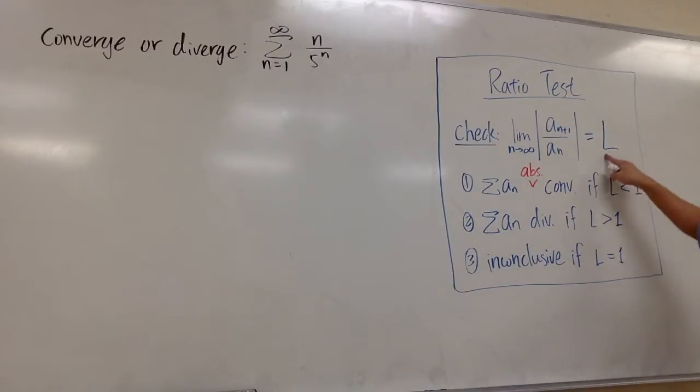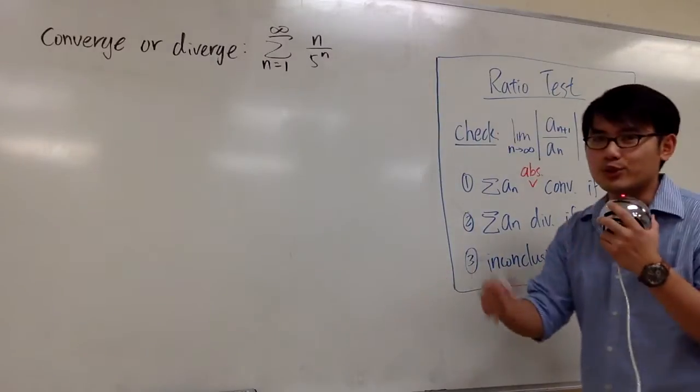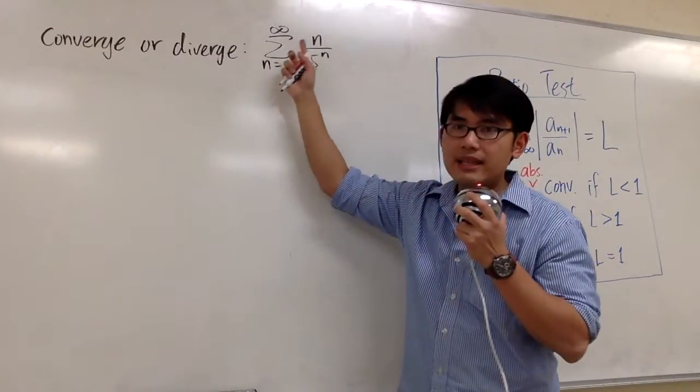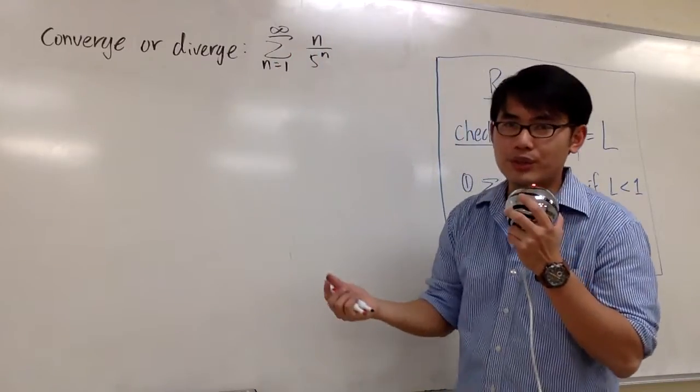If we have the limit, if we know the limit is less than 1, then we know that the series converges absolutely. But if L is bigger than 1, then the series diverges. If L is equal to 1, unfortunately we don't know if it converges or not; it's inconclusive for the ratio test. So we're going to apply the ratio test right here to see what we get.